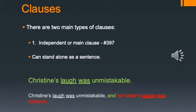There are two main types of clauses to keep in mind. The first is an independent or main clause — don't worry about writing notes yet — that's definition number 397 in the Plain English Handbook. These are sentences that can stand alone. They have a subject and a verb, they make complete sense, and you put a period at the end.